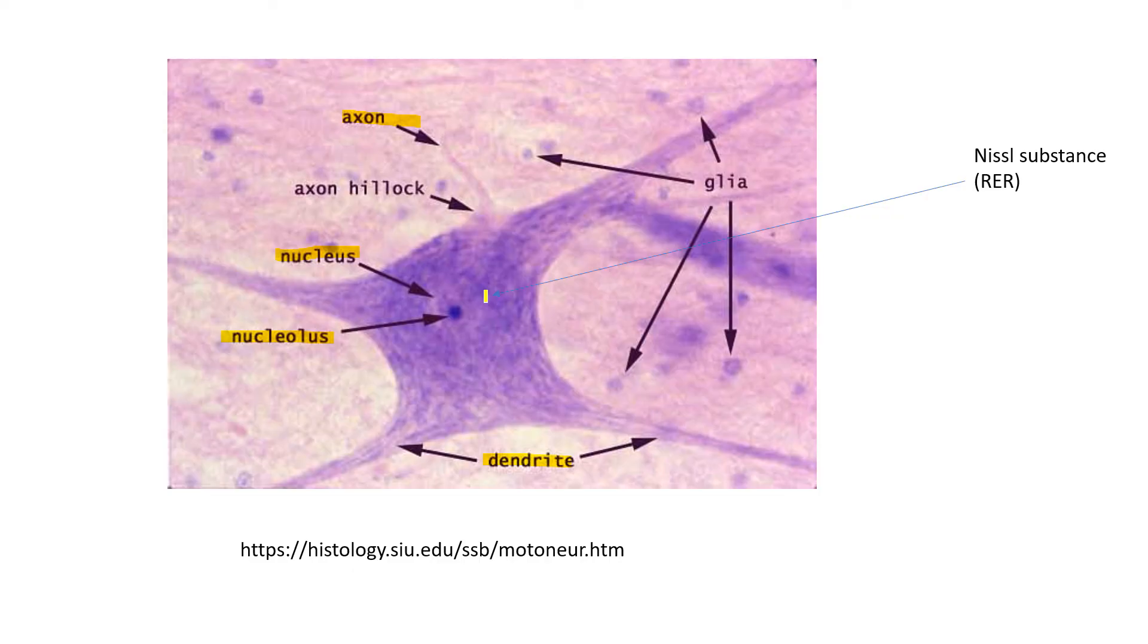So the Nissl substance, or rough endoplasmic reticulum, is constantly producing neurotransmitters, like acetylcholine, which are proteins. And that's why it's very prominent, because it's very active.